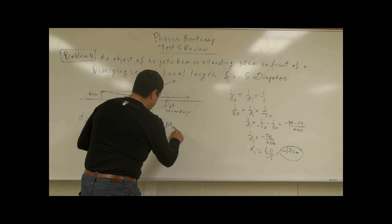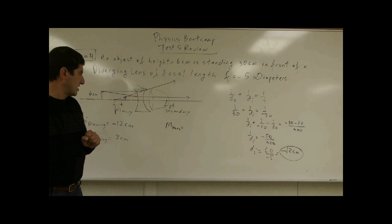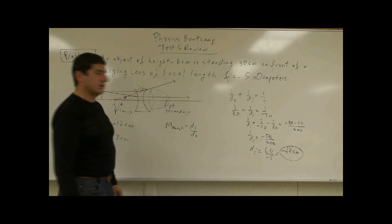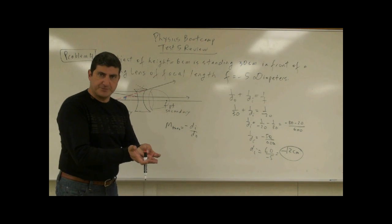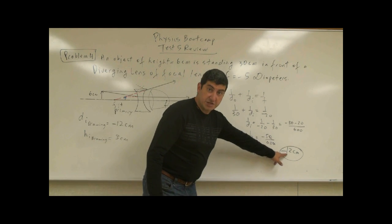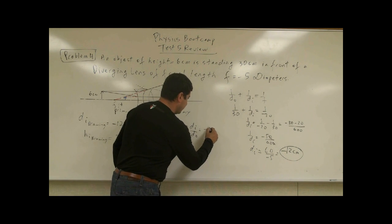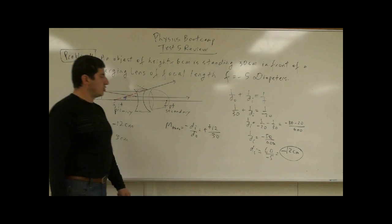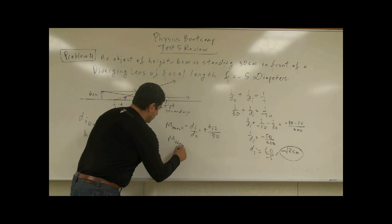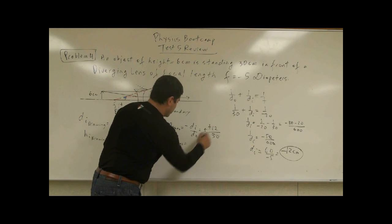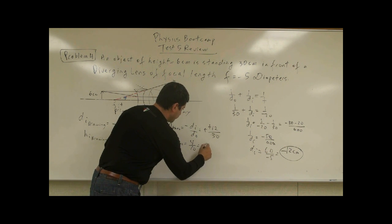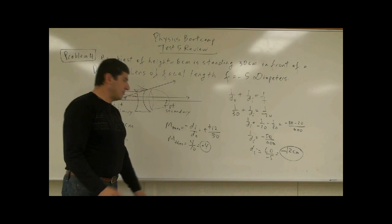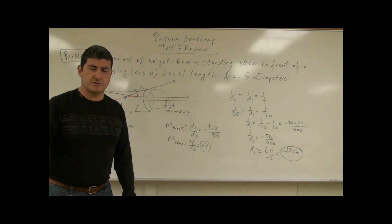So from the theoretical magnification — what should the theoretical magnification be? The theoretical magnification is going to be negative DI over DO. The negative is already in the equation, so if DI is negative that means it's a virtual image. You put negative negative: DI is negative 12, DO is equal to 30. So according to that, the magnification is 12 over 30, which equals 0.4. That means according to theory, the image should be 40 percent of the size of the original object.